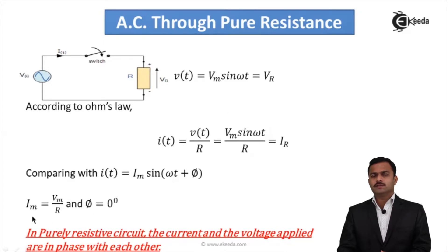What is the conclusion I can draw here? In a purely resistive circuit, the current and the voltage applied are in phase with each other because for both quantities, the phase angles I am getting are zero.